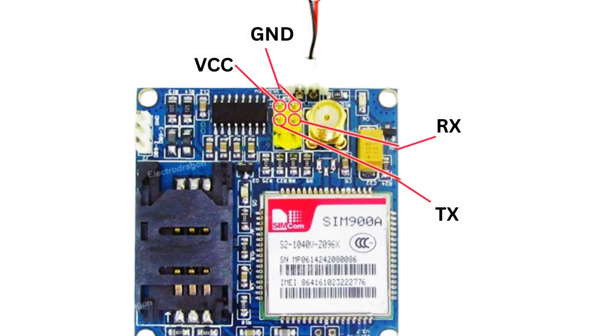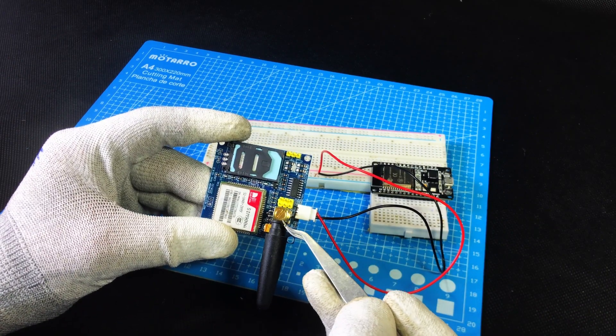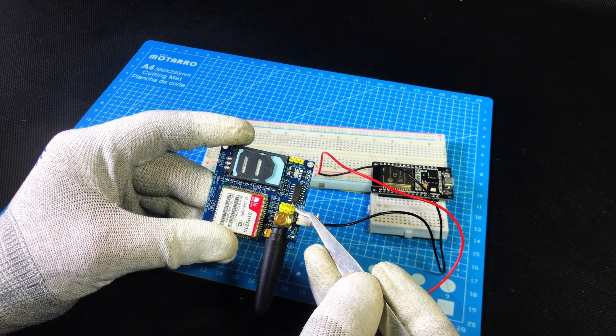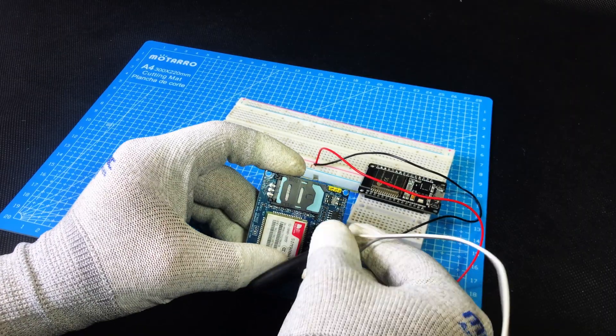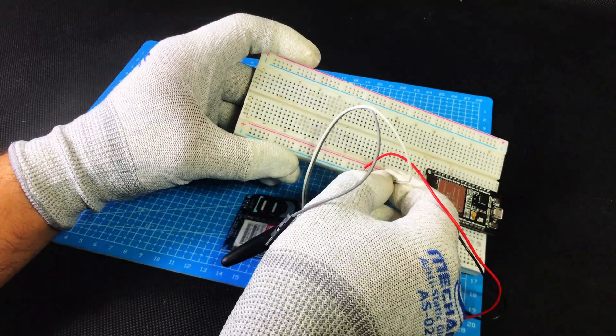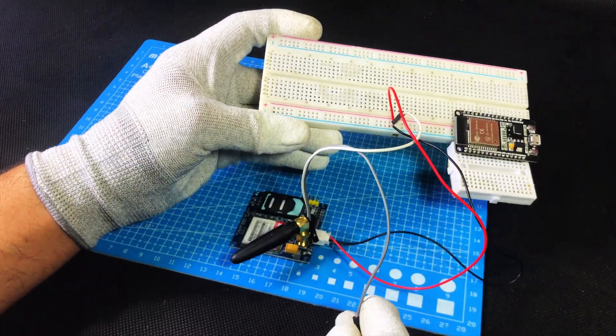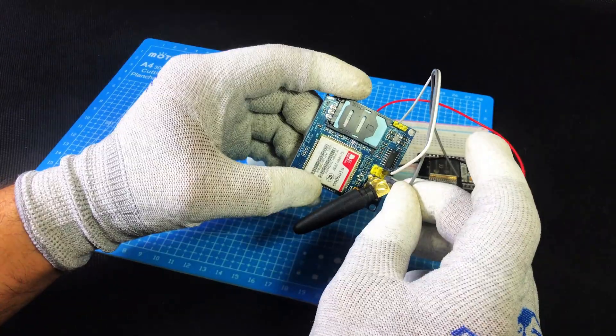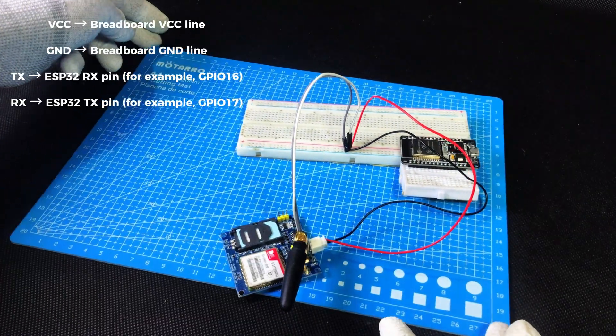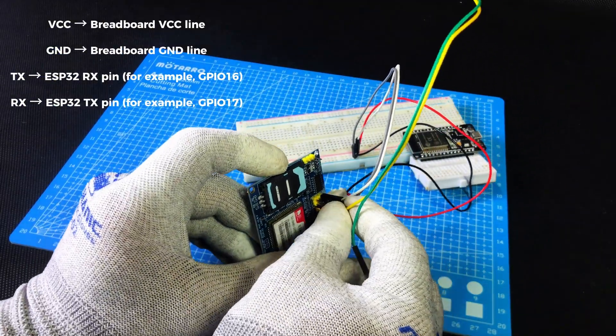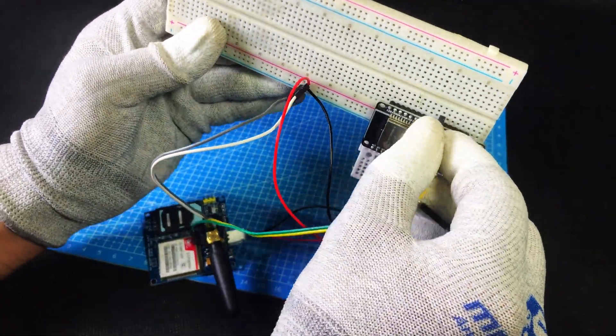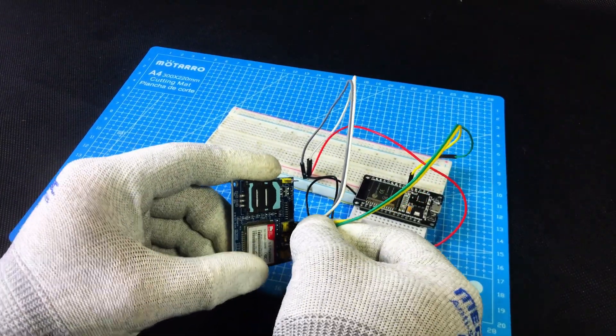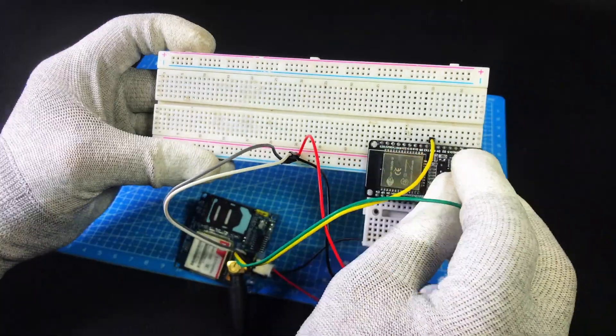You can also see that in the center of the GSM module, there is a six pin header for the antenna side. Out of these six pins, we will use four pins only. First pin is VCC, second pin is GND, third pin is TX, fourth pin is RX. Connect the VCC pin of the GSM module to the VCC line of the breadboard. Connect the GND pin to the GND line of the breadboard. Then connect the TX pin of the GSM module to the RX pin of the ESP32, and connect the RX pin of the GSM module to the TX pin of the ESP32.